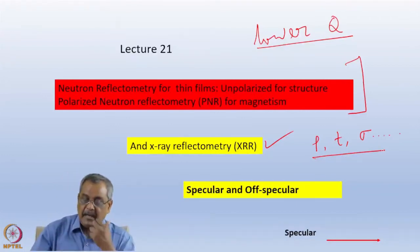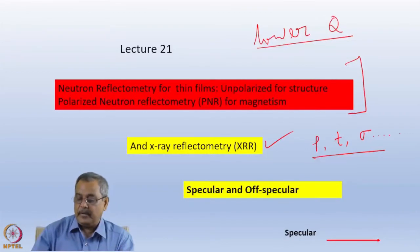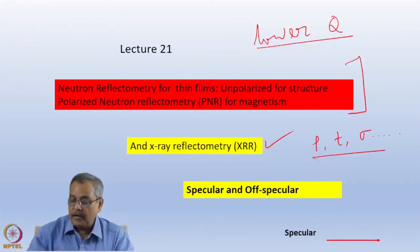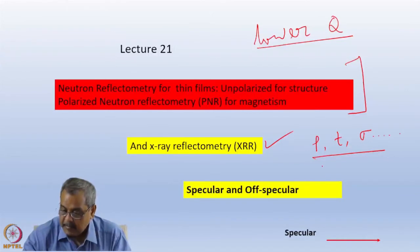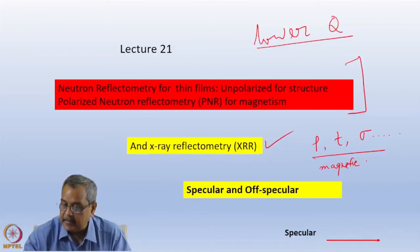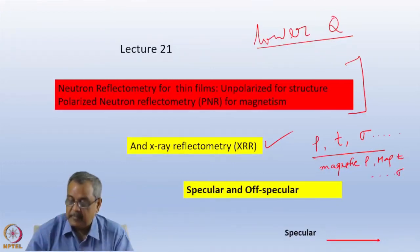But in addition, Polarized Neutron Reflectometry can be used for the same things but with the magnetic term in front — so magnetic density, magnetic layer thickness, and also magnetic roughness.